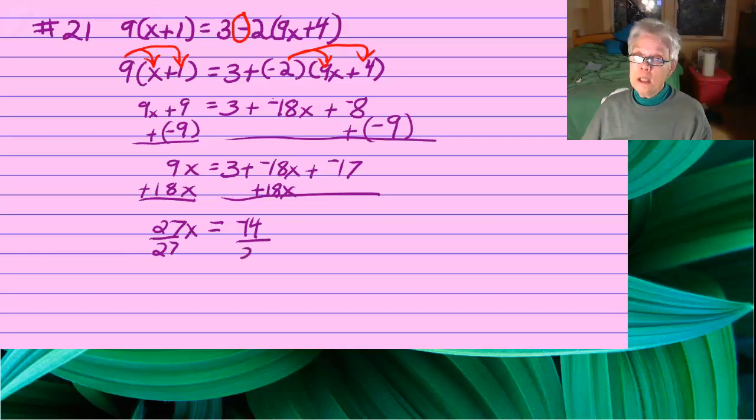Divide by 27 on both sides. And you'll have x equals, be careful, it's negative 14 over 27. I got fooled too. You can't reduce it.